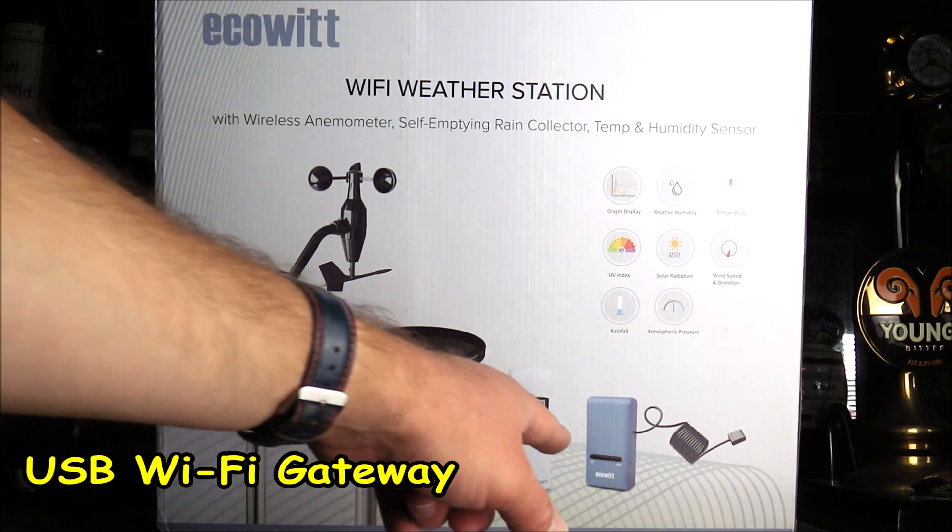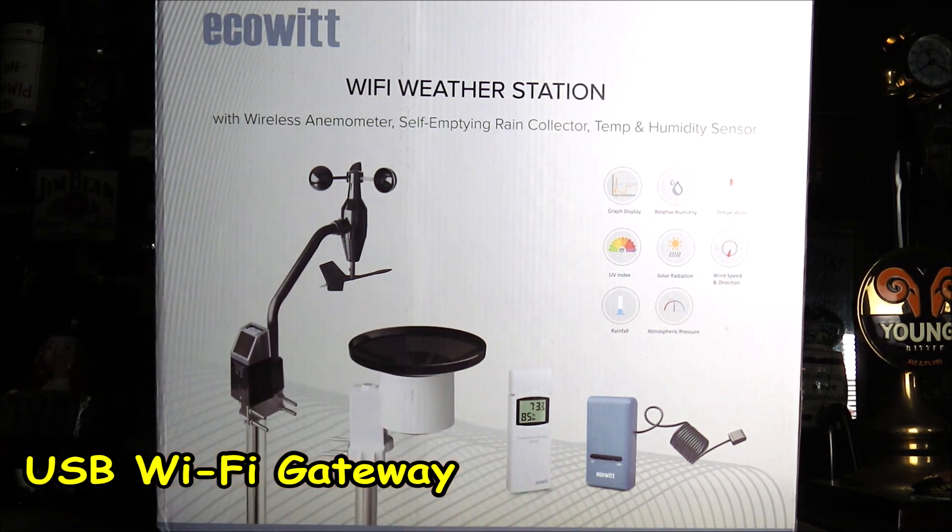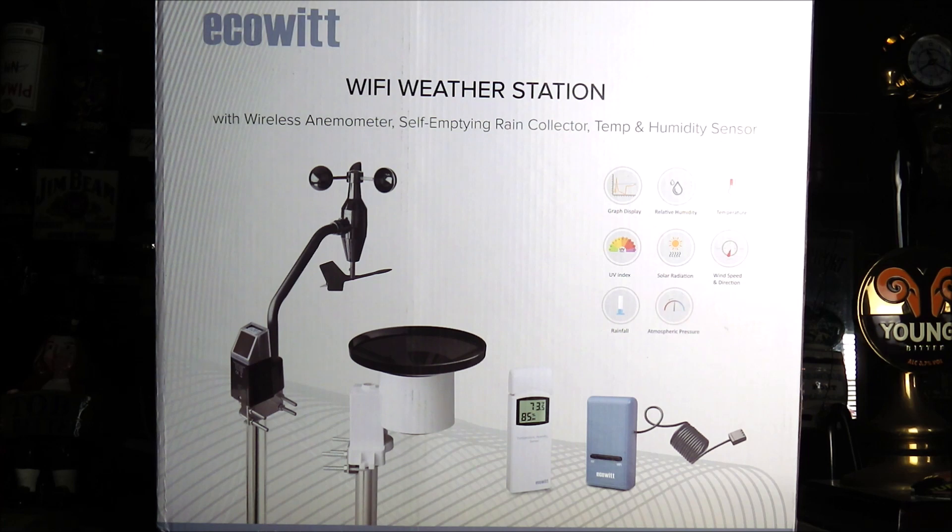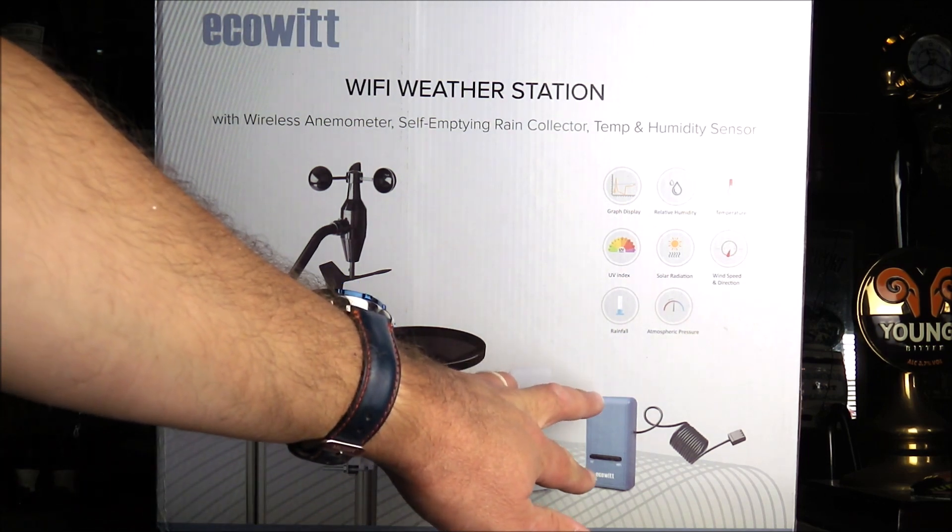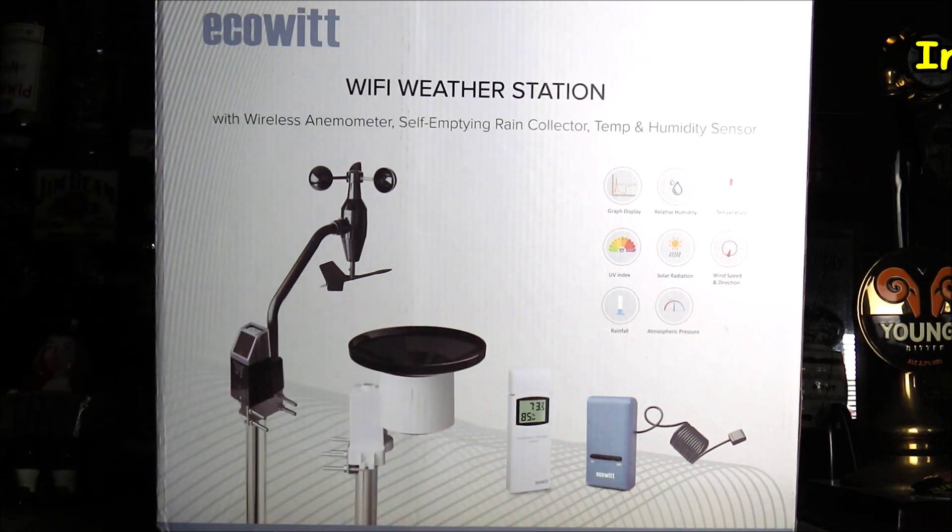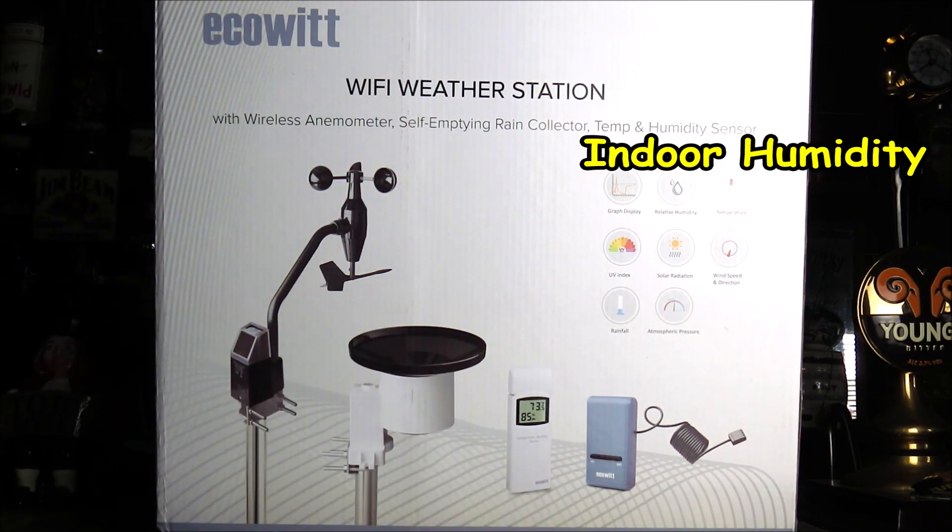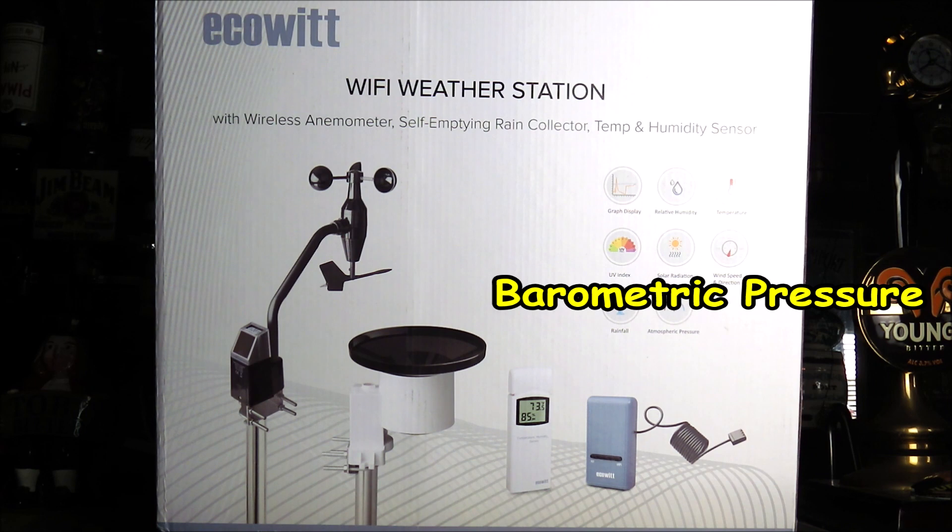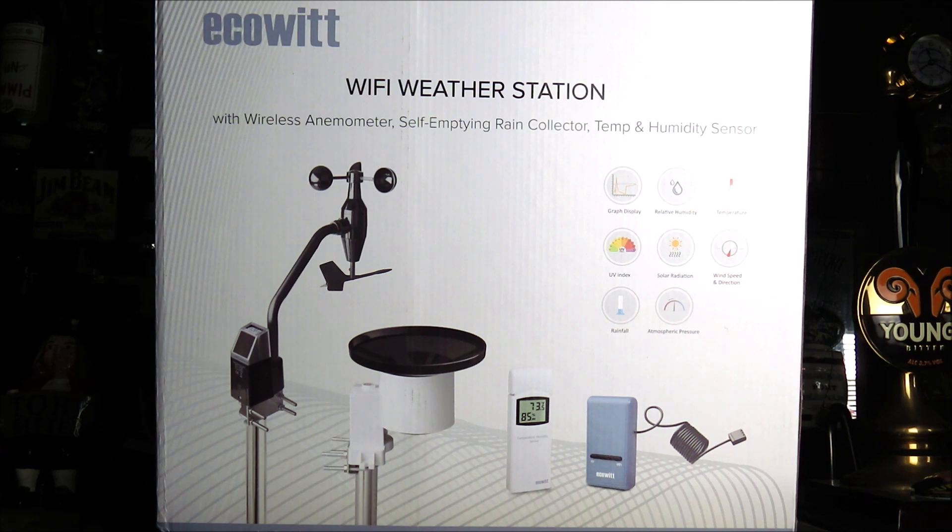We have the USB gateway here, which pushes all the data up to the app and onto the internet. The USB gateway also features an indoor temperature, humidity, and air pressure sensor, so you can collect all that data from inside your outbuilding.